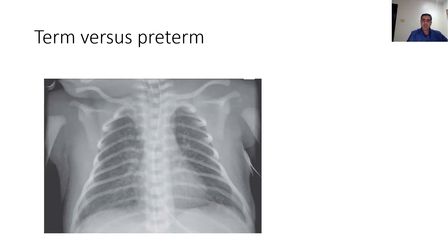An important landmark to look for in neonatal X-ray is the presence of the head of humerus ossification, which indicates that this newborn baby is a term baby.